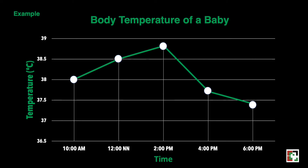We can conclude the following. First, the baby's body temperature at 6 p.m. is 37.4 degrees Celsius. Next, the highest body temperature of the baby is recorded at 2 p.m., which is about 38.8 degrees Celsius. Next, the baby's body temperature at 1 p.m. is about 38.7 degrees Celsius. And lastly, from 2 p.m. to 6 p.m., the body temperature of the baby is continuously decreasing.